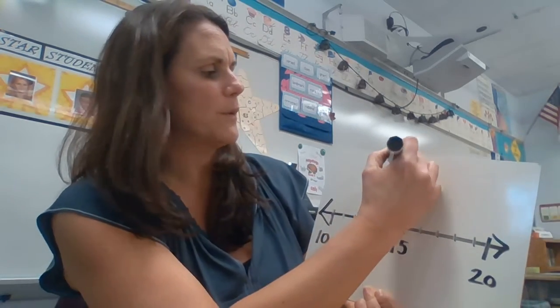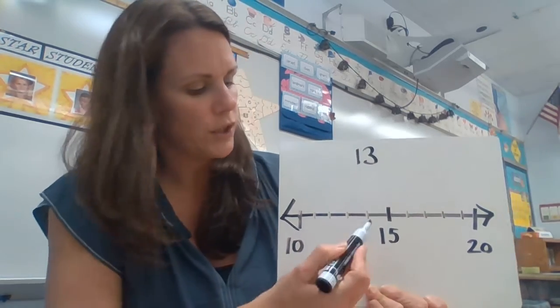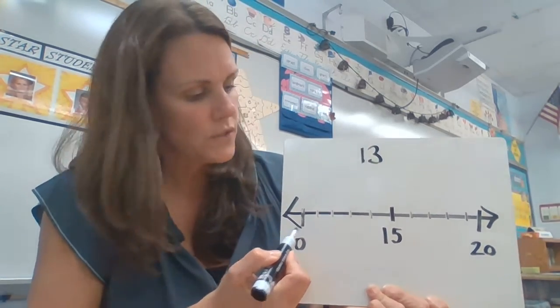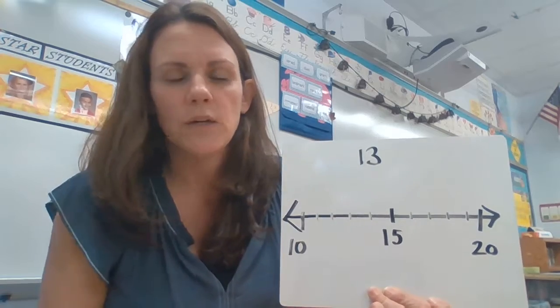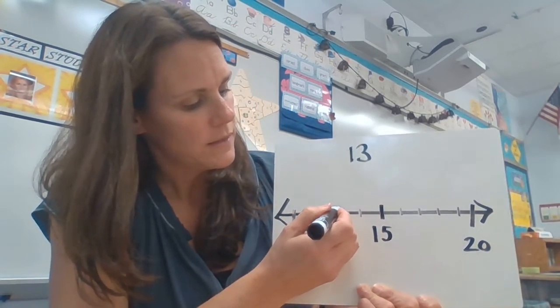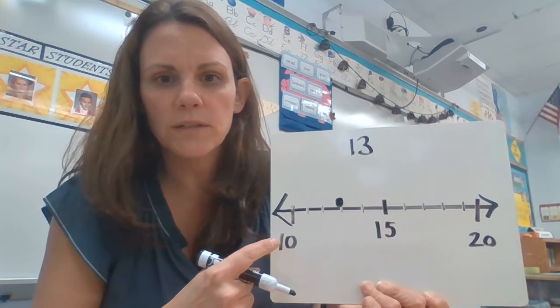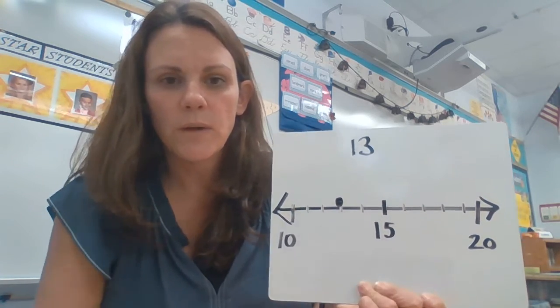So if we're thinking about the number 13, we've got to decide: is it closer to the 10 or is it closer to the 20? So if you can picture it on that number line, it would be right here. Is that dot closer to 10 or closer to 20?